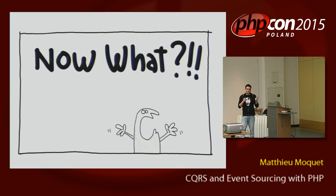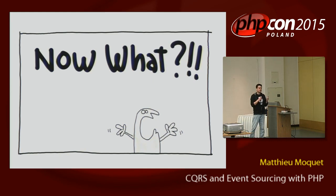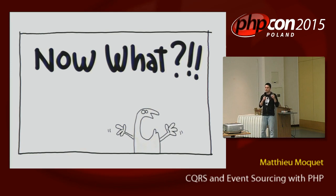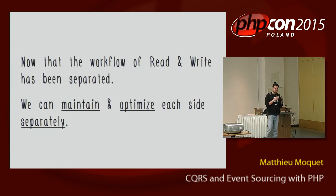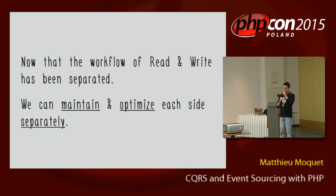This is what a CQRS model looks like. Basically, I have a command facade and the command handler will get the command — the write operation from the user — using its own model and saving to one database. And we have different models and repositories for the query side. So we don't share one entity for both read and write.